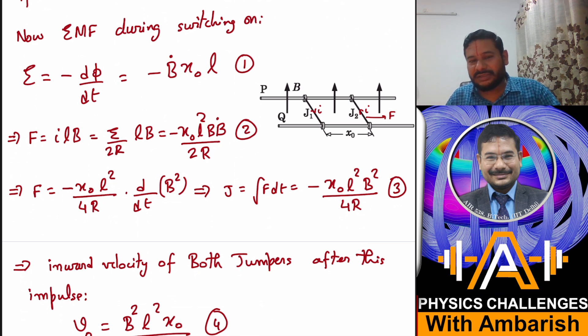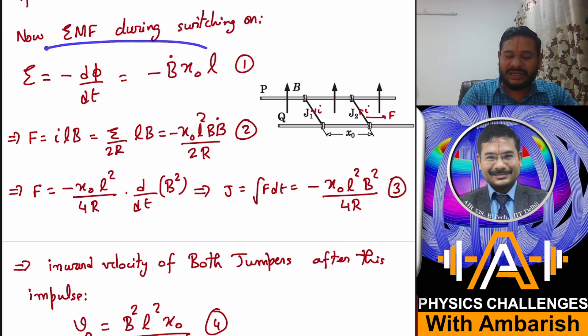Here I am talking about that Ḃ is the rate of change of field during that infinitesimal interval of time where B is growing. In any case, I can write EMF as minus Ḃ·x₀·l, because flux is B into area and area is x₀ into l.